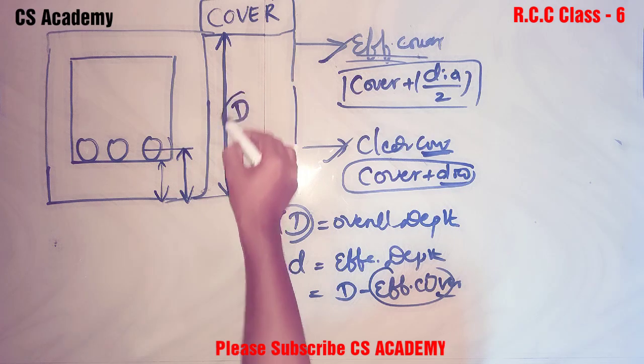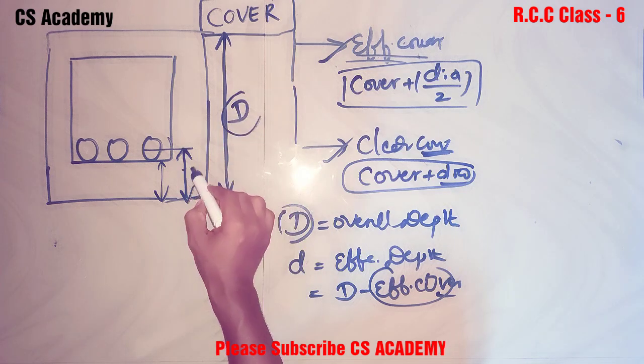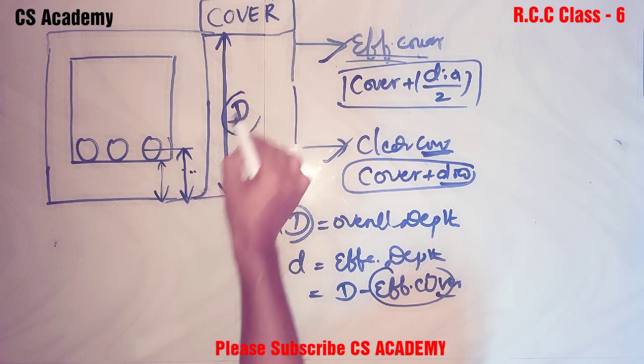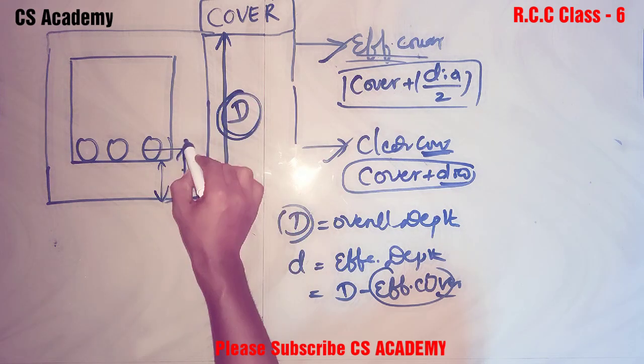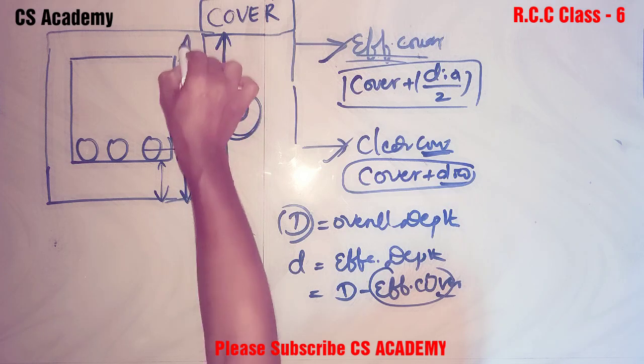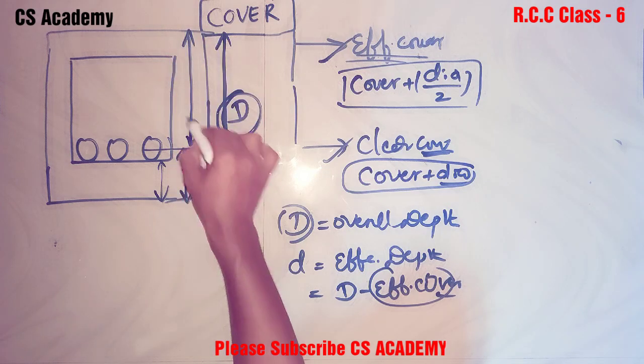If I remove the effective cover from the total overall depth D, I will get small d. So: small d = D minus effective cover. This relationship between overall depth and effective depth is very very important.